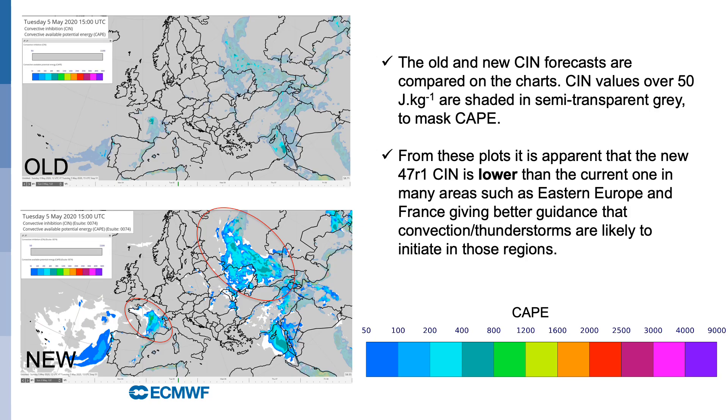These charts show an example of the typical difference before and after the changes. In many areas such as Eastern Europe and France, thunderstorms look more likely to initiate due to lower values of CIN.